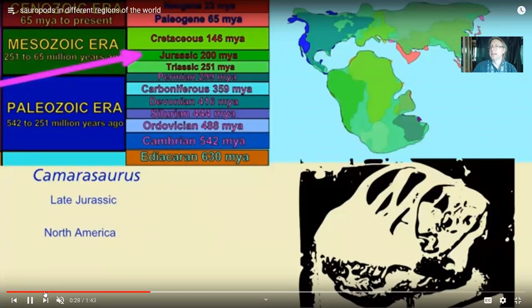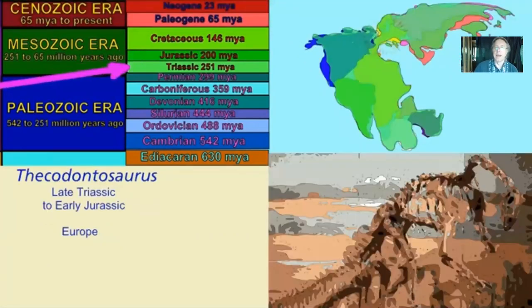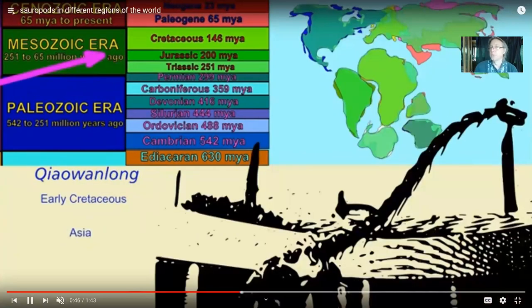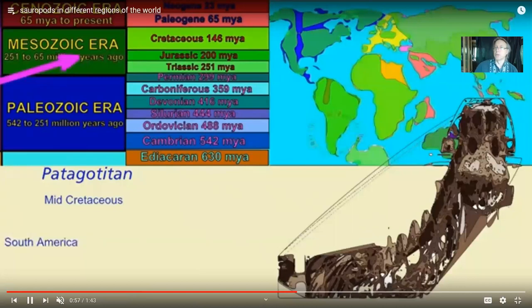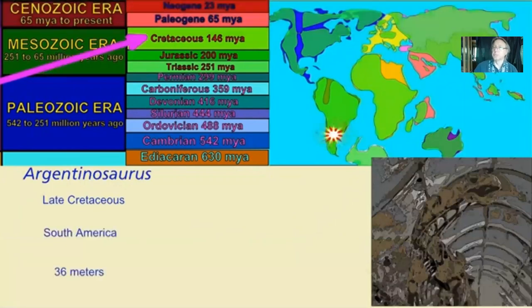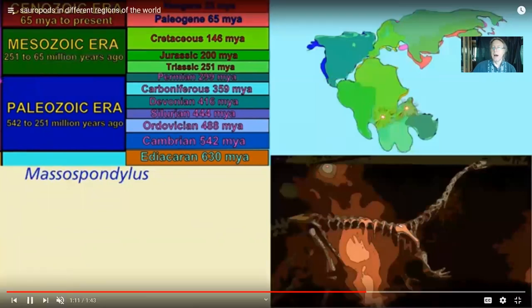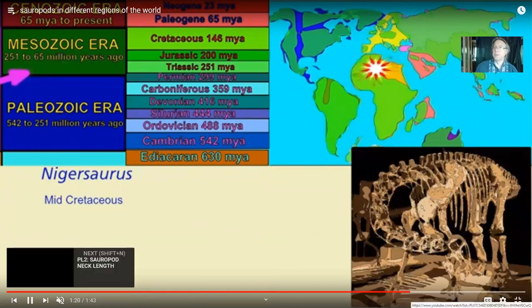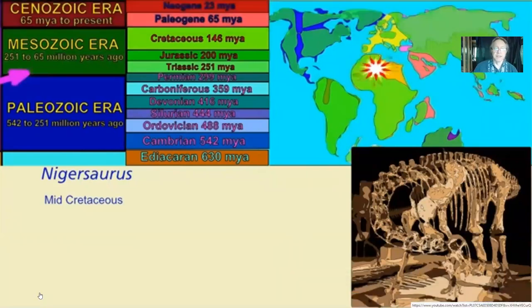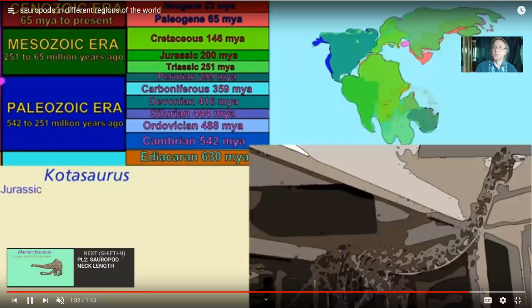Late in the Cretaceous, South America was moving away from Africa. You can find sauropods in Asia, South America, and even Antarctica. Continental drift clearly affected the distribution of these sauropods. The world is big and the Mesozoic era was an enormous expanse of time, so individual species existed in specific parts of the world during specific blocks of time — not throughout the entire Mesozoic everywhere on Earth.